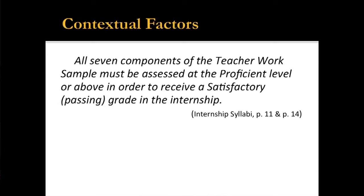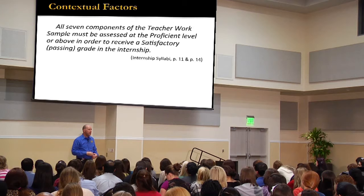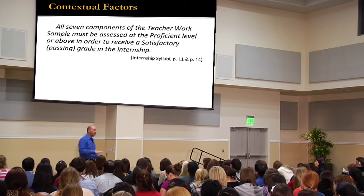I want to draw your attention to a sentence that appears twice on page 11 and once on page 14 of your syllabus: all seven components must be assessed at the proficient level or higher for you to pass. At the undergraduate level, that's a satisfactory rating. At the graduate level, that's a passing grade. If you want to go on and be a teacher, you need to be assessed at proficient or better on all seven components.